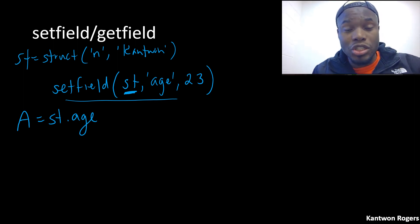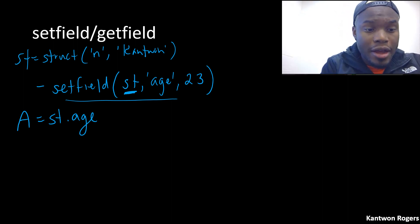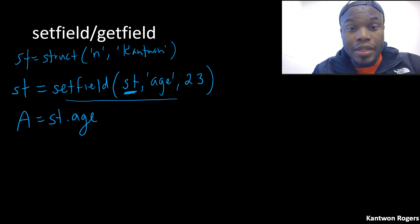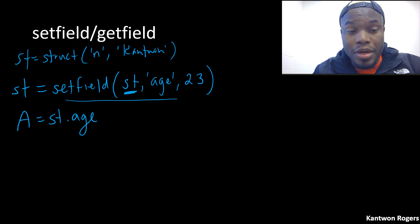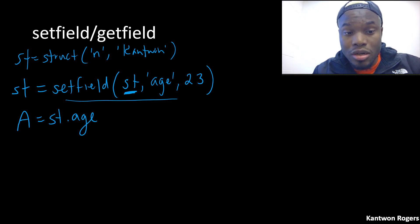So if I actually want to change my structure itself, I have to overwrite the structure I have in the input — I would have to set this back to st. Now 'a' would give me 23 because I've actually changed that structure. This is very important because on tests, we'll have something like a setfield that isn't assigned to anything or is assigned to some other variable. You have to know that it's not changing the actual structure in the input unless you overwrite it.